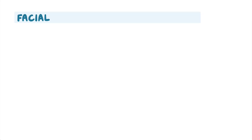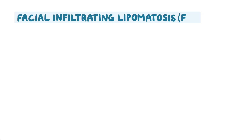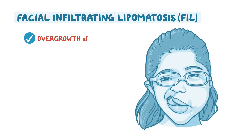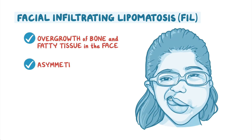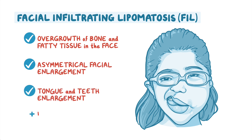Facial infiltrating lipomatosis, or FIL, leads to overgrowth of bone and fatty tissue in the face, causing asymmetrical facial enlargement, tongue and teeth enlargement, and rarely nerve tumors.